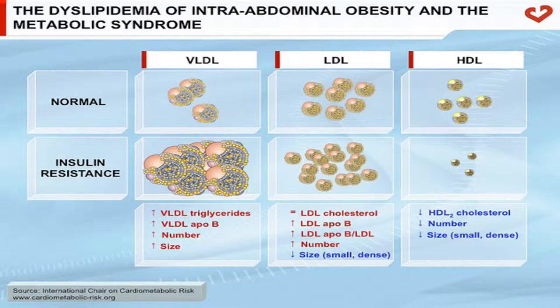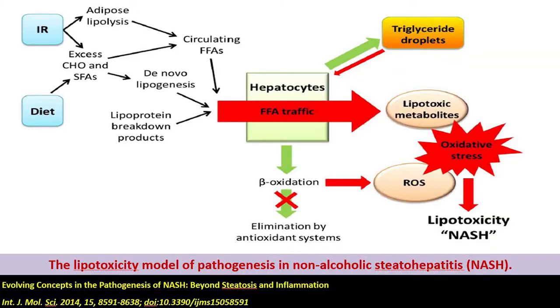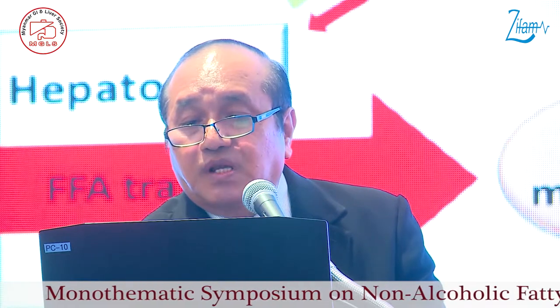We call this the lipid overflow hypothesis for the pathogenesis of liver fat accumulation. Because of increased calorie diets and insulin resistance leading to increased circulating free fatty acids, carbohydrate excess and saturated fatty acids leading to de novo lipogenesis, and lipoprotein breakdown products, there is an increased traffic of free fatty acids into the hepatocytes with reduced ability for oxidation and VLDL export, resulting in an accumulation of fat in the liver, leading to non-alcoholic fatty liver disease or simple steatosis.